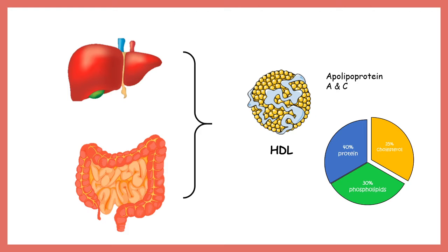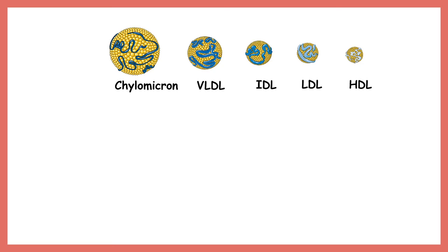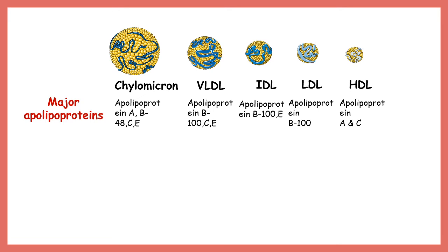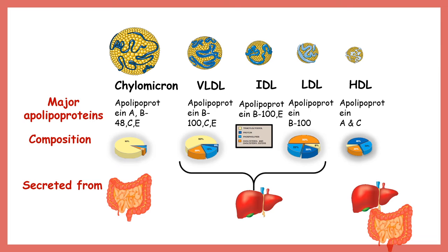HDL is known as good cholesterol. Comparing all lipoprotein molecules — chylomicron, VLDL, IDL, LDL, and HDL — HDL is smaller in size, with very high density of protein and very little fat. The major apolipoprotein that makes HDL unique is apolipoprotein A1, which is not present in many other lipoprotein particles. HDL consists majorly of protein, whereas LDL and other particles are either more triglyceride or cholesterol rich.